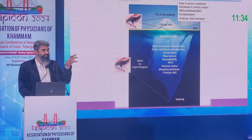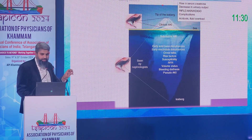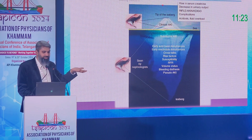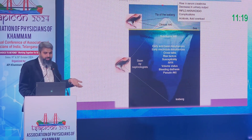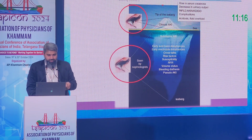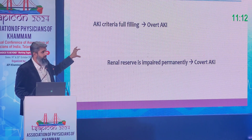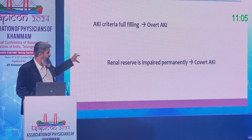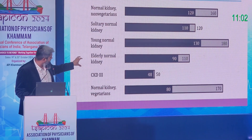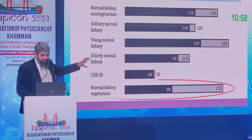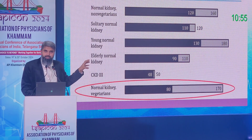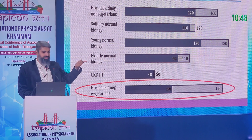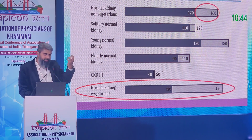Clinical experience helps identify pseudo AKI or covert AKI — identifying kidney injury even before creatinine rises, by detecting reduction of renal reserve. Vegetarians are at higher risk of having a healthier kidney and higher renal reserve, because high protein intake leads to more risk of tubular fibrosis and damage. Non-vegetarians therefore have a lesser renal reserve.